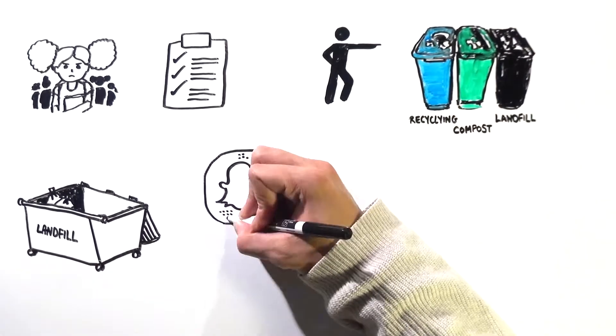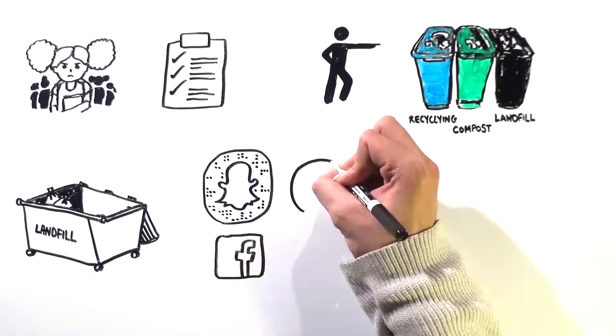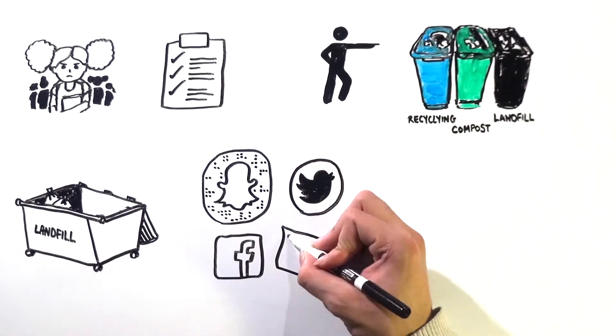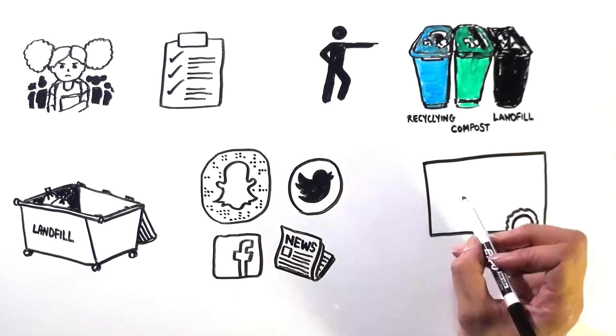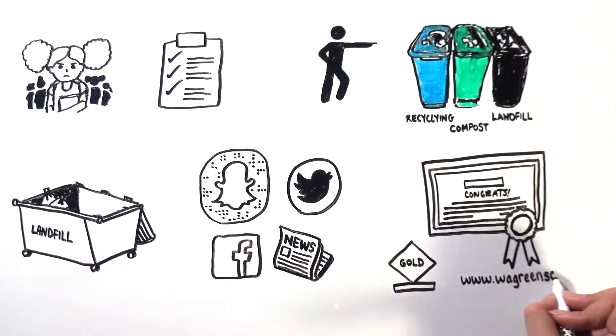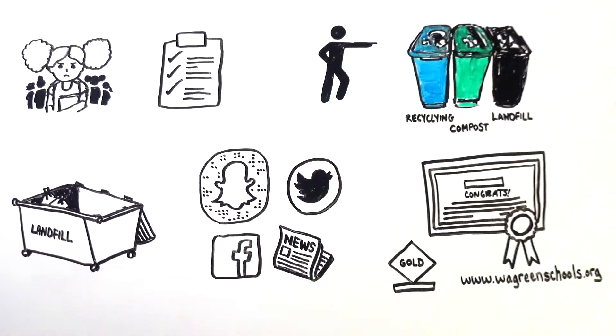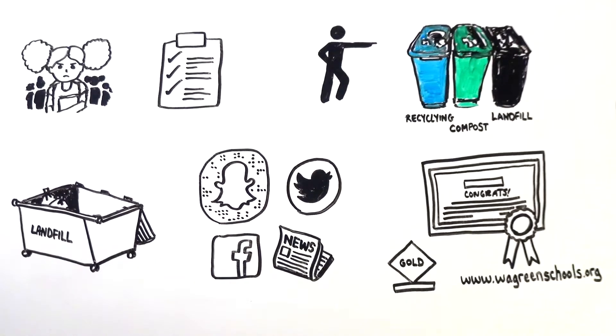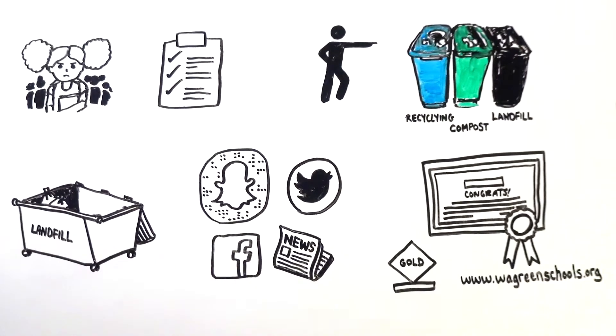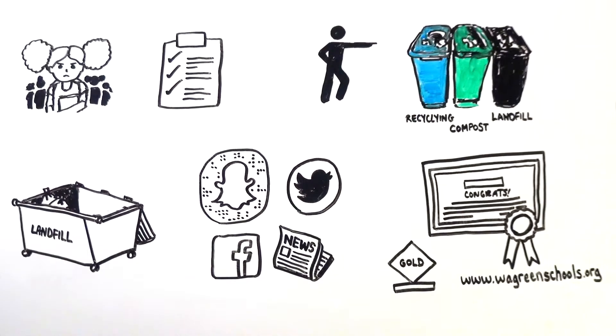The green team shared their story any way they could—social media, parent newsletter, and the local newspaper. As these steps were being carried out, Tamiya and her green team recorded the school's effort on an online report card on the Washington Green Schools website. Once submitted, we reviewed the report card and certified the school as a Washington green school.